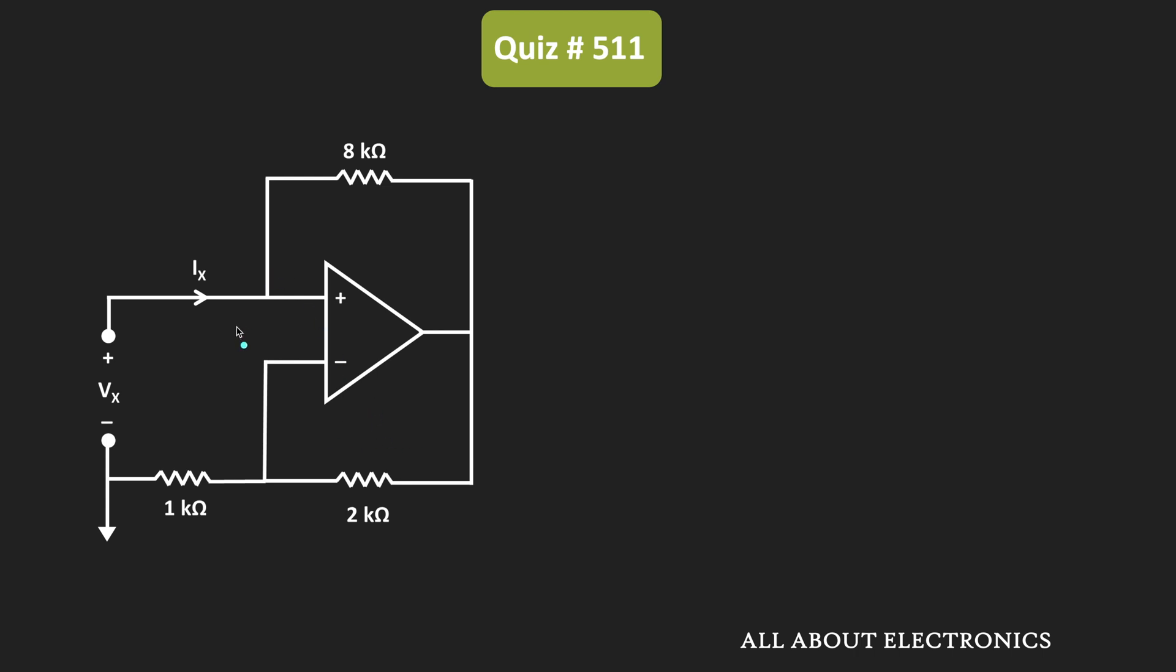So let's say the voltage at this node is equal to Vy. So applying the KCL at this node, we can say that this current Ix, that is this current, is equal to Vy minus Vout divided by 8 kilo ohm. Let's say this is the equation number one.